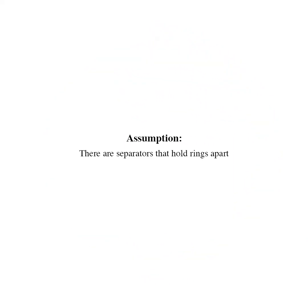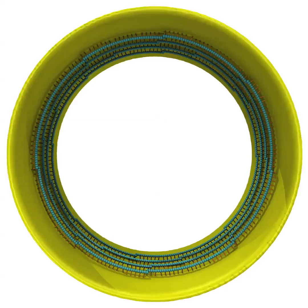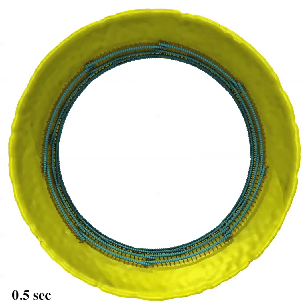We then assume that the cell has separators, shown here as gray spheres, that hold filaments in separate rings to prevent bundling.